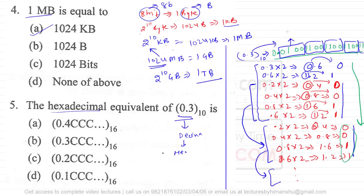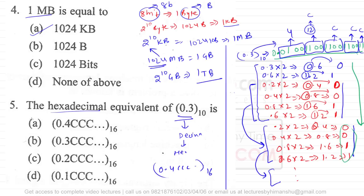Grouping the binary digits into nibbles for hexadecimal conversion: 0100 represents 4, and 1100 represents 12, which is 'C' in hex. So the hexadecimal equivalent is 0.4CCC... base 16. Therefore the correct answer is option A.